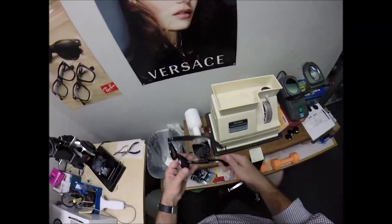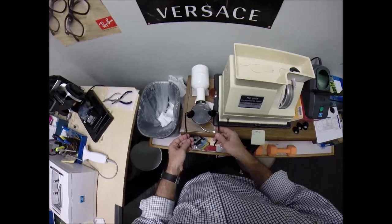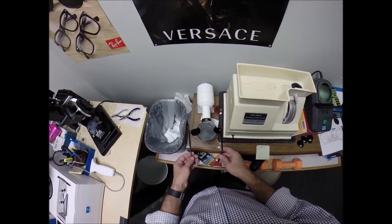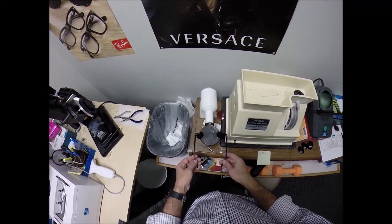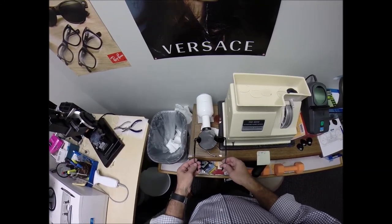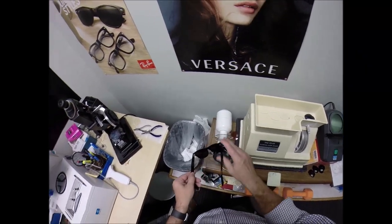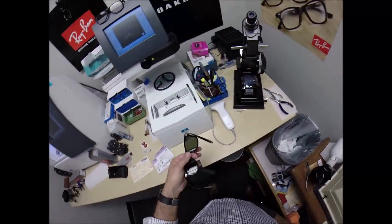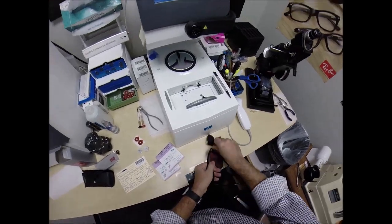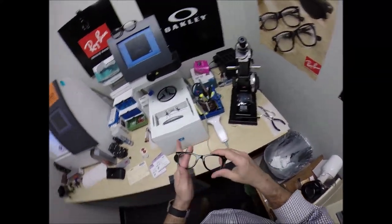I'm going to use this heat gun, essentially a hairdryer, and blow heat onto the front of the lenses of the frame, making the plastic more pliable. This frame has a very deep bevel and I need to soften it up in order to get the lenses out. Out comes that lens. That's what's involved.